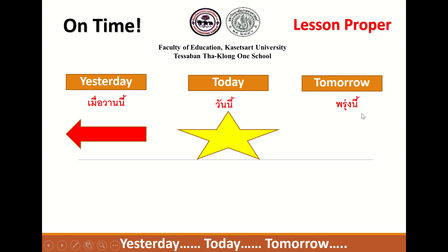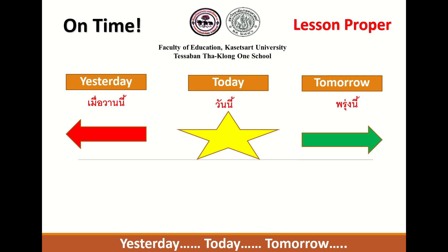So what is tomorrow? Meaning, it will happen — tomorrow will be happening. Let's have our examples for yesterday, today, and tomorrow for the days of the week.